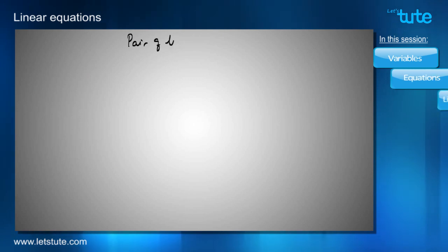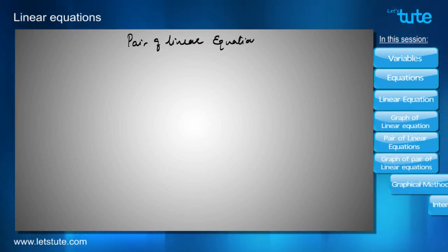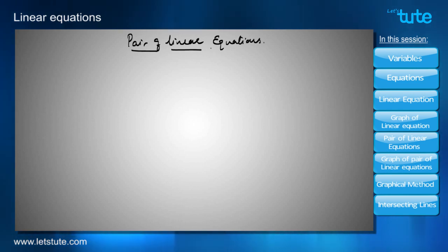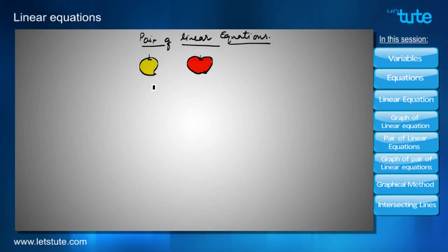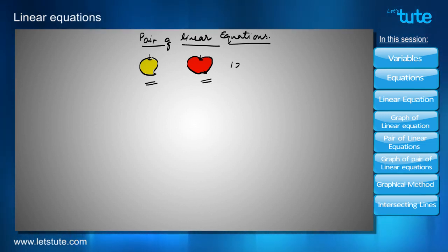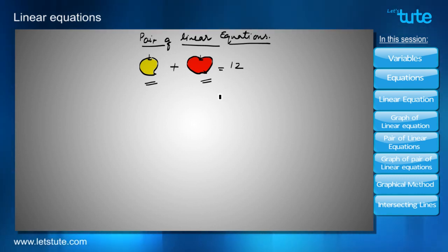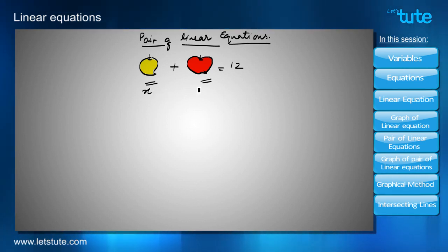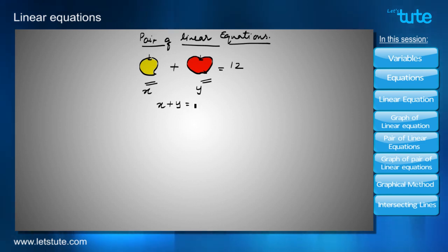Today we are going to learn about pair of linear equations — the basic concepts and terminologies. Let's consider a situation: I went to a fruit shop and bought one mango and one apple. The shopkeeper charged me 12 rupees for both. I assumed the price of one mango to be x rupees and the price of one apple to be y rupees, so the total expense is x plus y equals 12.